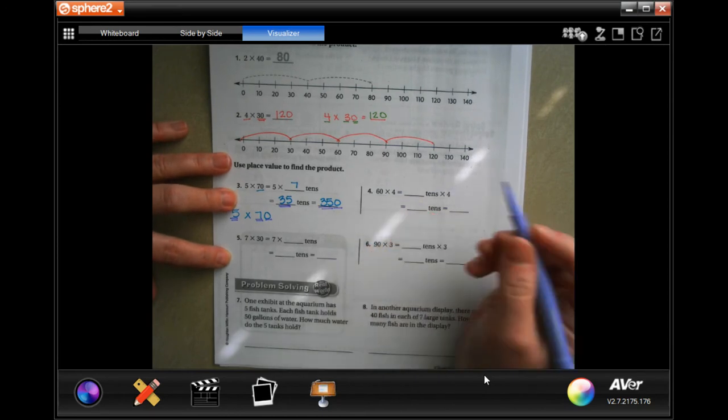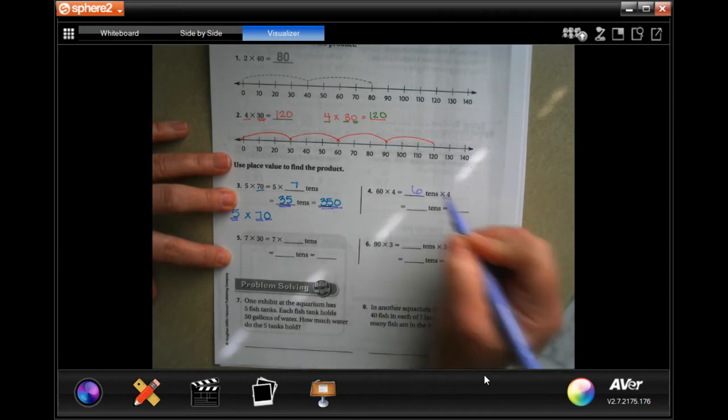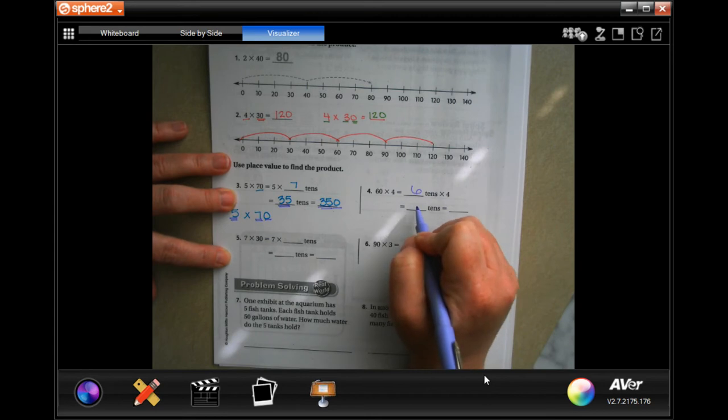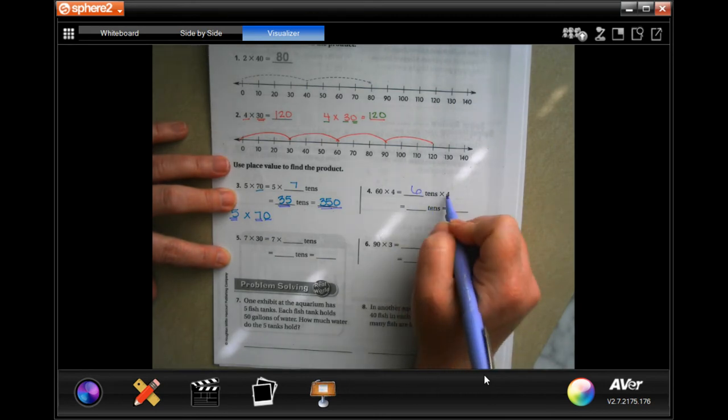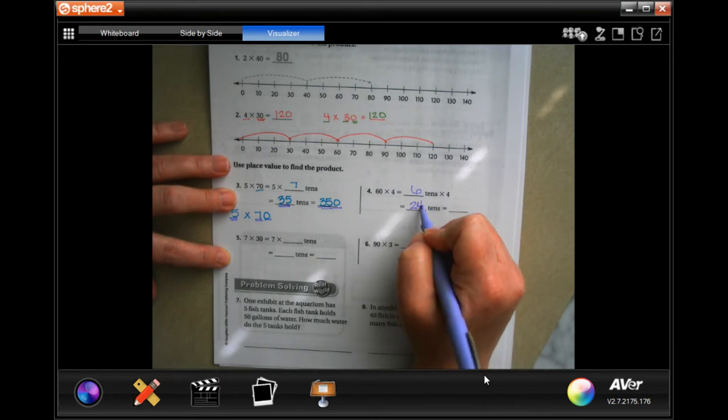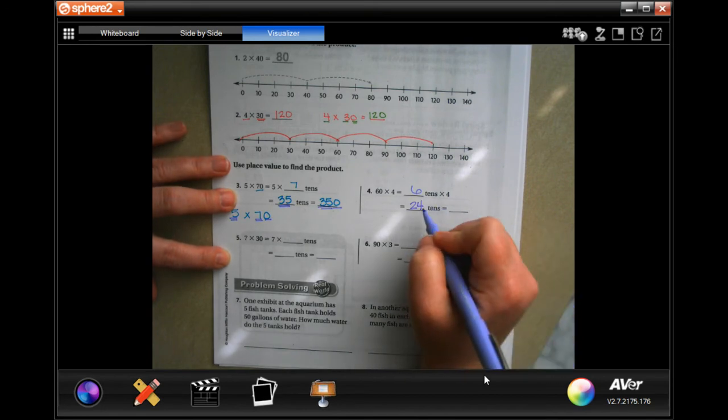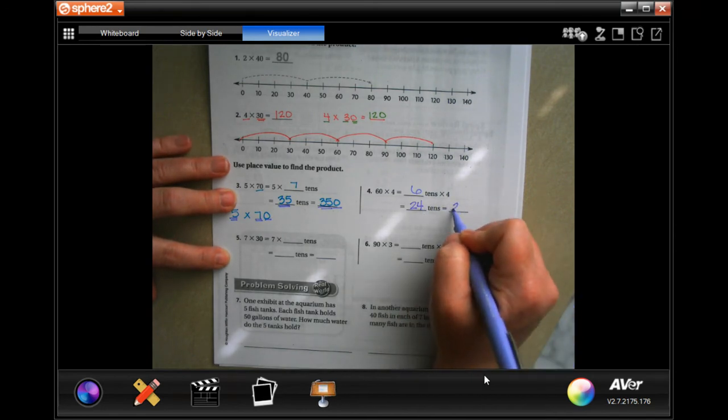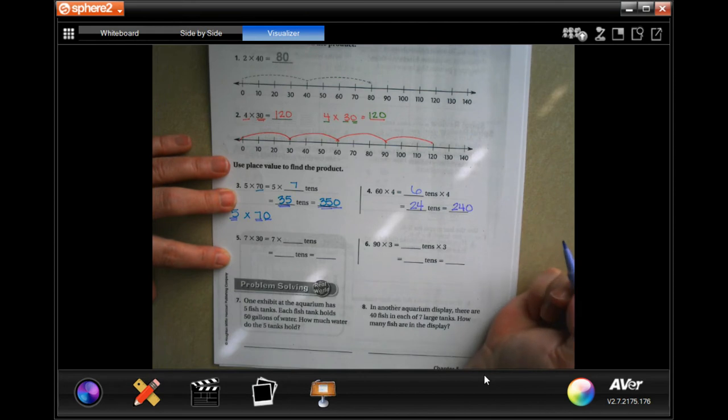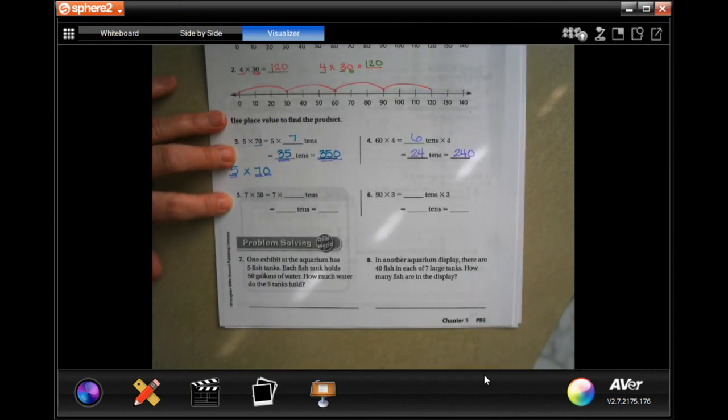So 60 times 4, well, that's going to be 6 tenths. And 6 times 4 is 24 tenths. And when you multiply 24 by 10, you're going to put a 0 on the end. You guys try 5 and 6. We're going to go down and do number 7.